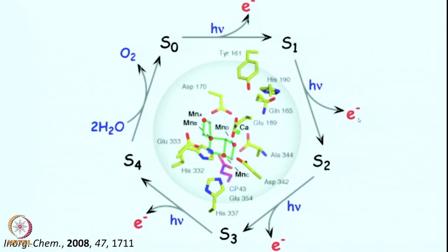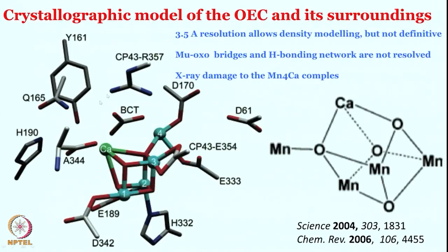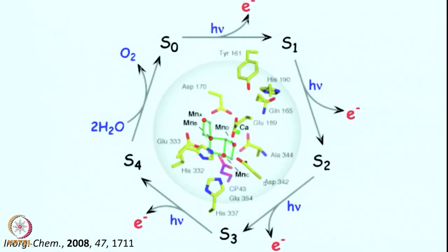We do not know for sure what the 4 different manganese oxidation states are, but none the less these will be oxidized by one electron at each step. S1 to S2 is also one electron oxidation; S2 to S3, another electron goes out in the presence of light; S3 to S4, another electron goes out. This is the fully oxidized form; the fully reduced form is S0. The fully oxidized form will now react with water to give oxygen, reforming the fully reduced form S0, and that is how the catalytic cycle proceeds.